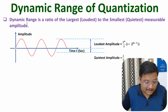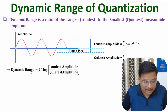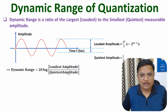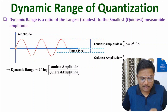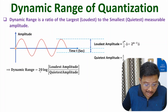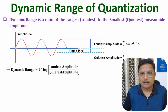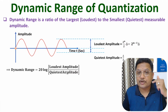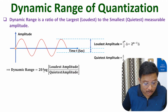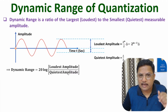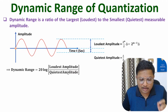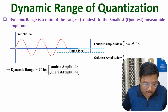If you want to measure dynamic range in terms of dB, that will be 20·log(loudest amplitude / quietest amplitude). The reason we write 20·log is because we are talking about a ratio of amplitude. If we were talking about a ratio of power, it would be 10·log(loudest power / quietest power), but since we are dealing with amplitude, it is 20·log of loudest amplitude divided by quietest amplitude.